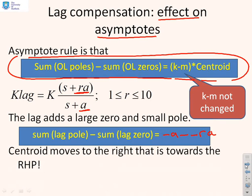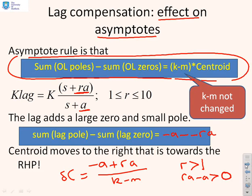So having done that, we can deduce that the centroid is going to move by minus A plus RA over (K minus M). I'm going to call that delta C for the change in the centroid position. And the key thing is you'll notice that R is bigger than one, and therefore RA minus A is bigger than zero. Therefore this delta C is positive. So the centroid has moved to the right.